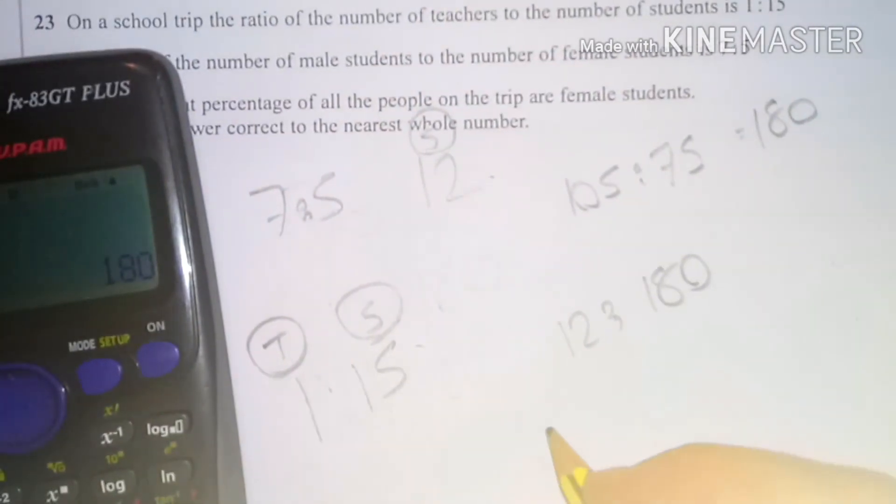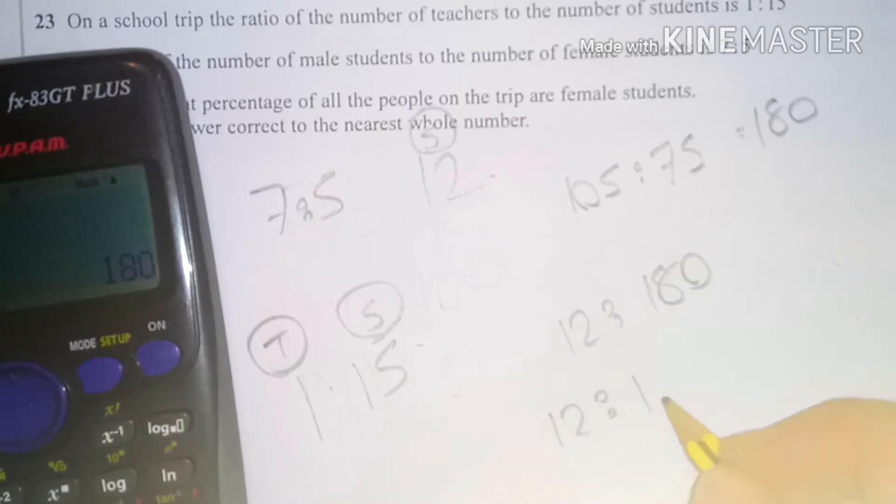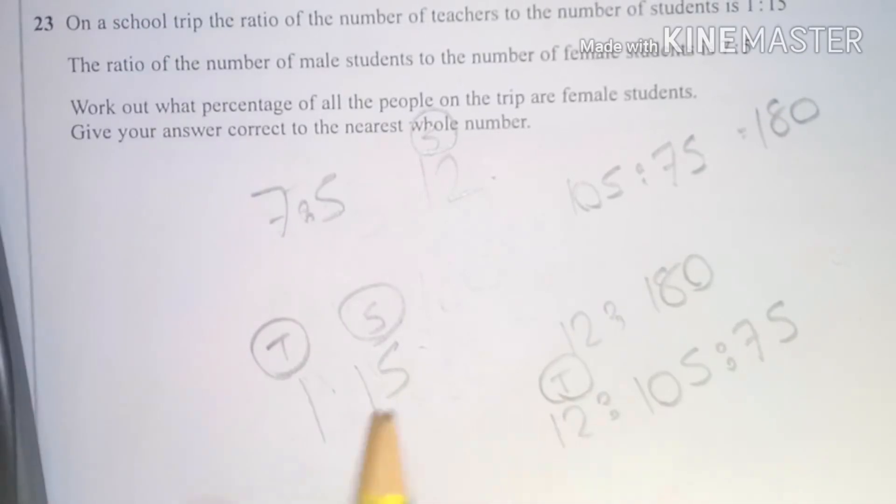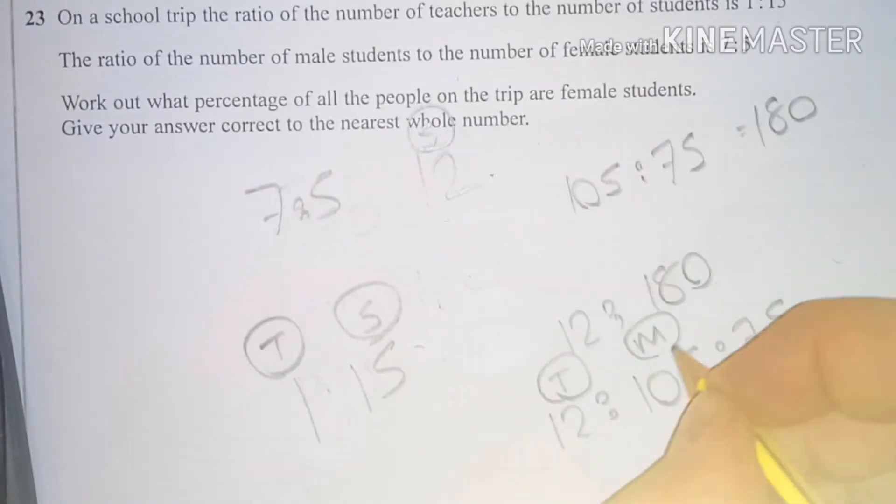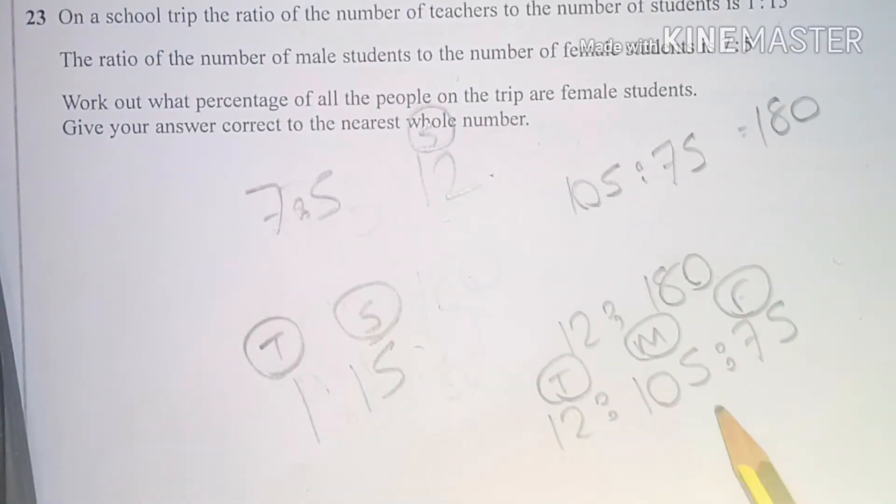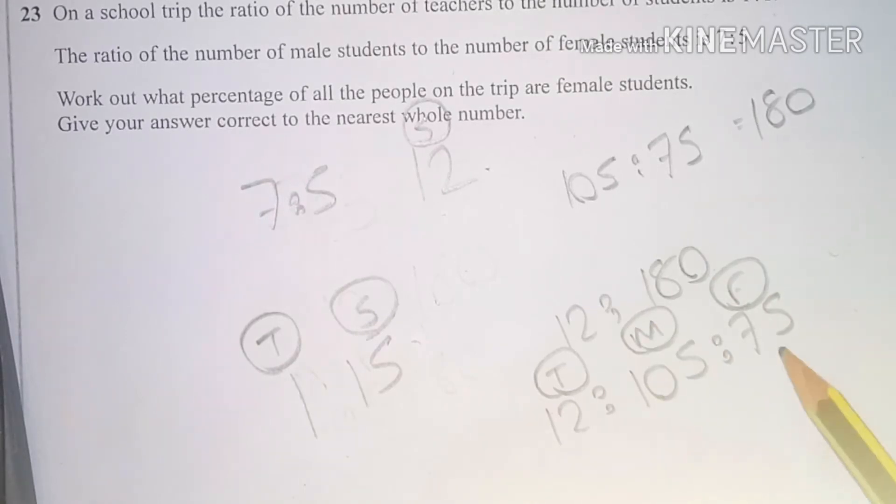180. Now I can combine this to make it 12 to 105 to 75. And just to be clear, this is teachers to males to females. Okay, I could have chosen bigger numbers, but this is fine.